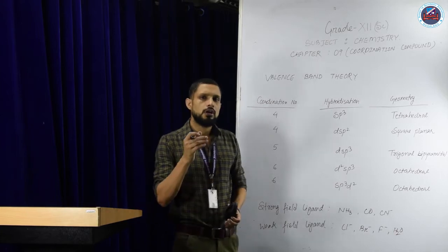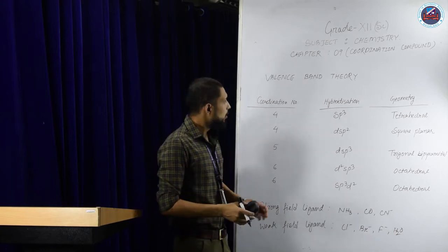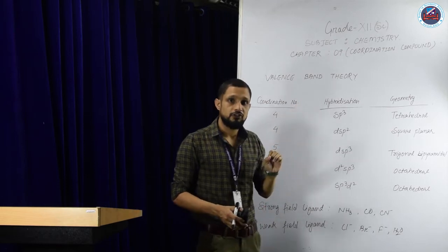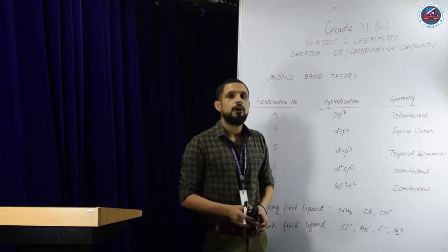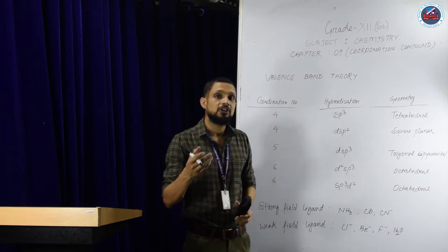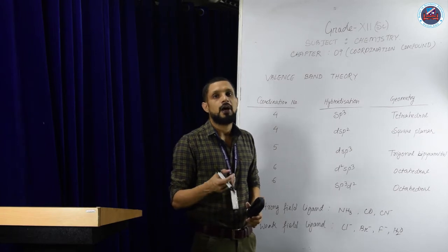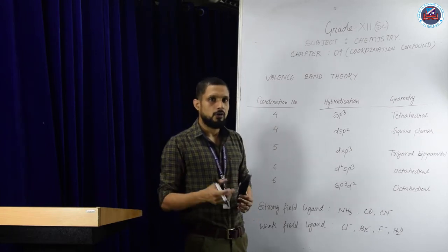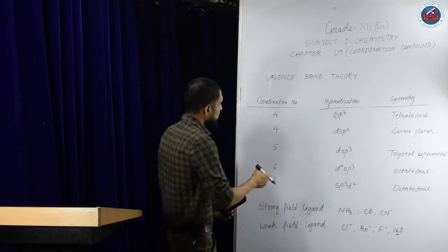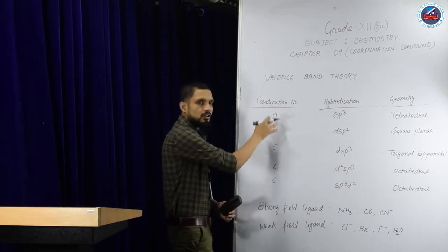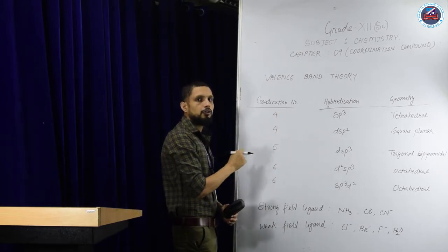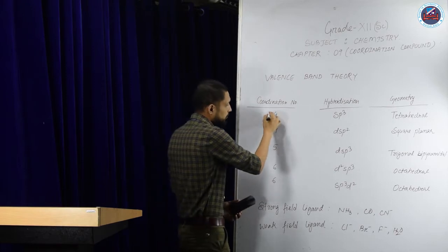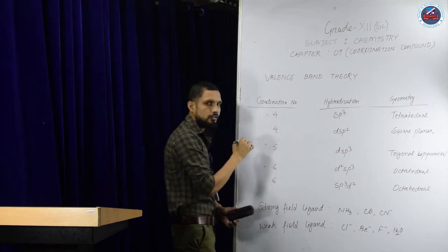In this topic, we have to study the types of hybridization, geometry, and magnetic property used by a coordination compound. Before we go to the examples, these are the coordination numbers used by coordination compounds — that is coordination numbers 4, 5, and 6.